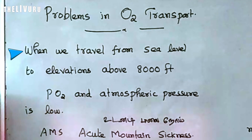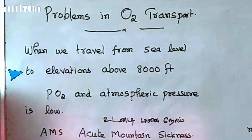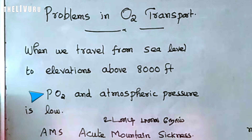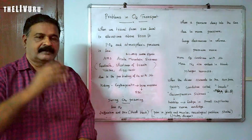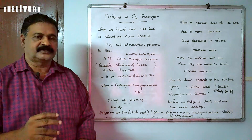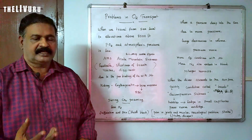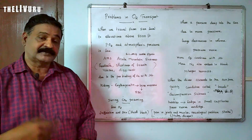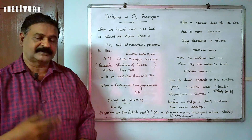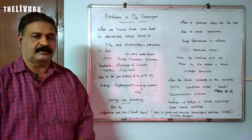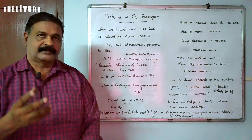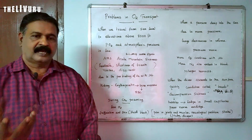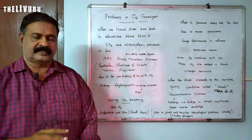When we travel from sea level to elevations about 8000 feet, the pressure of oxygen and atmospheric pressure is also low in the mountain region. In high altitude, the partial pressure of oxygen will be less, and the pressure of atmospheric air will be very very low. So oxygen is less than enough.